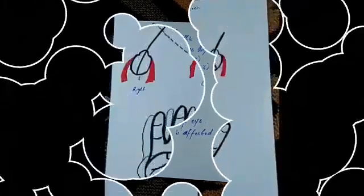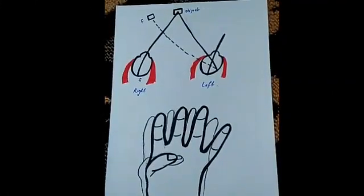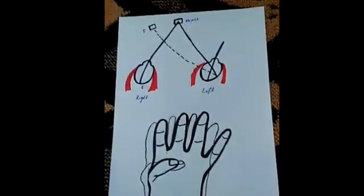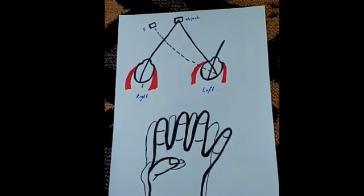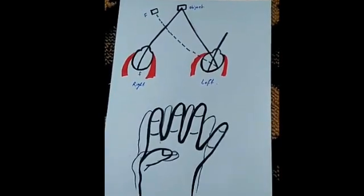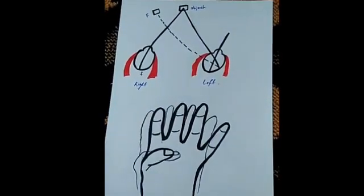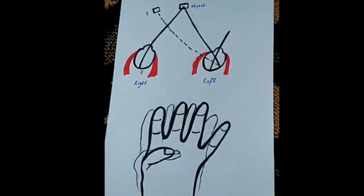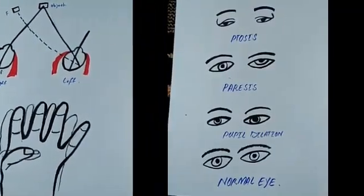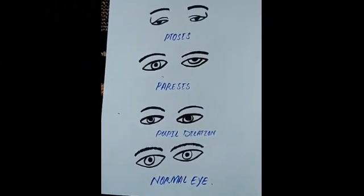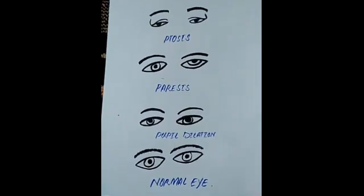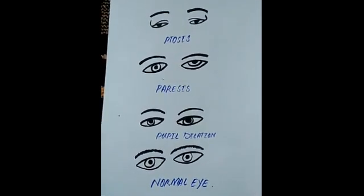The symptoms are diplopia, ptosis, paresis of the eye, and pupil changes. Diplopia is the condition of double vision — the patient is unable to see properly and gets false images rather than true images.